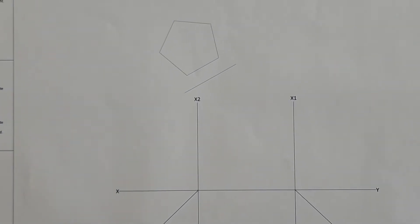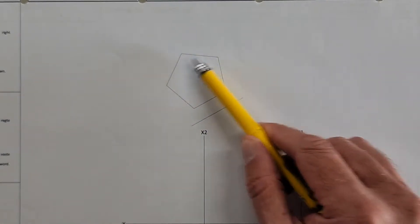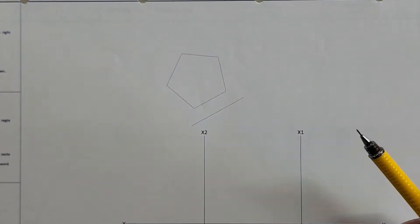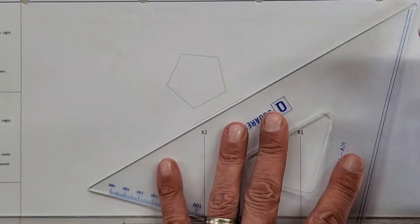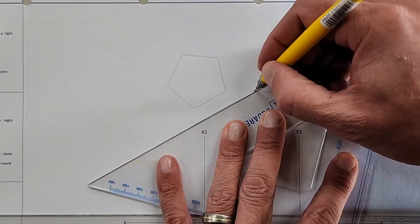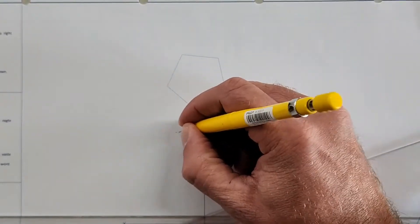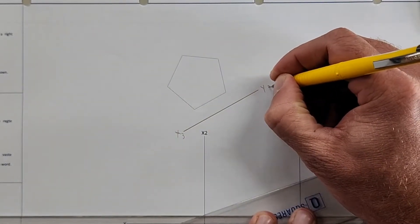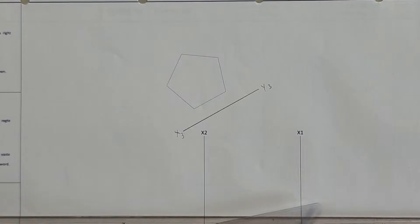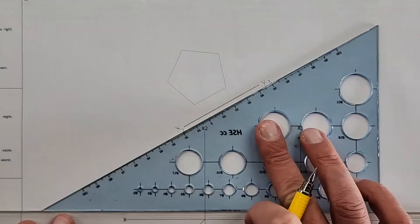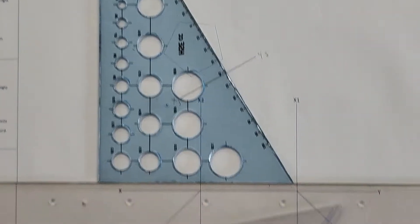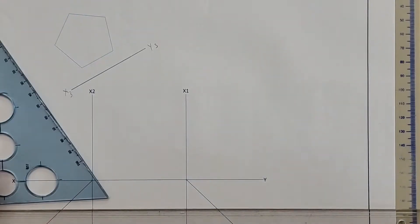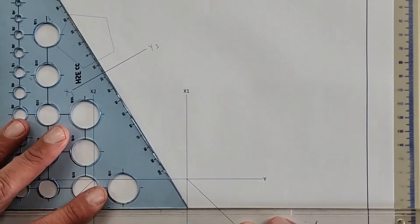The auxiliary view is going to be very beneficial - you won't be able to draw without it. Let's make this a clear XY line, which is X3Y3. The angle there is at 30 degrees, which is why we're using a 60-degree triangle to draw the top view. So how do we start this off in construction?